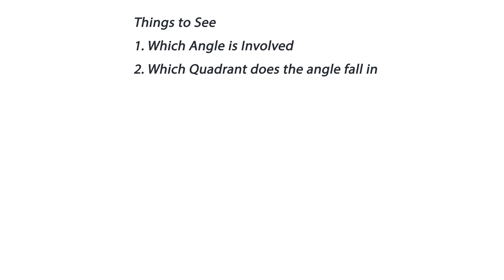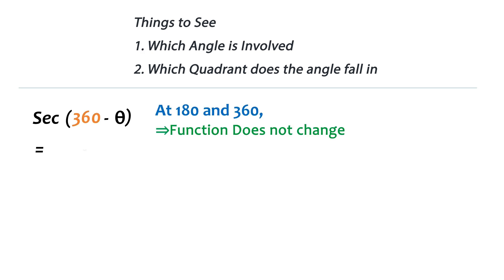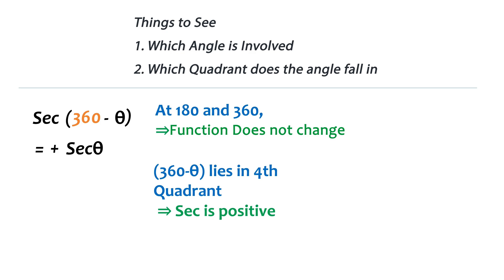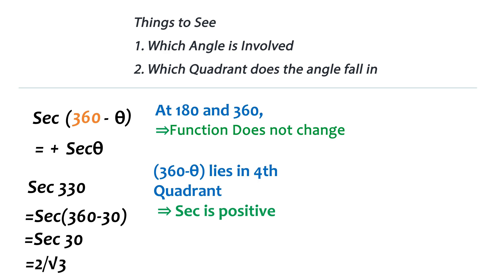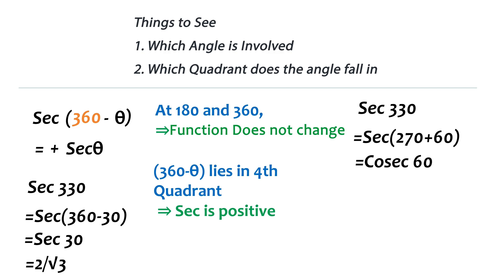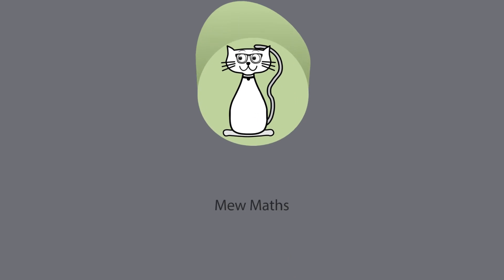Let's try sec(360−θ) at random. Since 360° is involved, the function doesn't change, so it remains sec. It lies in the fourth quadrant where cos and sec are positive, giving +sec θ. Practically, sec 330° = sec(360°−30°) = sec 30° = 2/√3. Note that sec 330° can also be written as sec(270°+60°): since 270° is involved, the function changes to cosec, giving cosec 60° = 2/√3 — the same result.